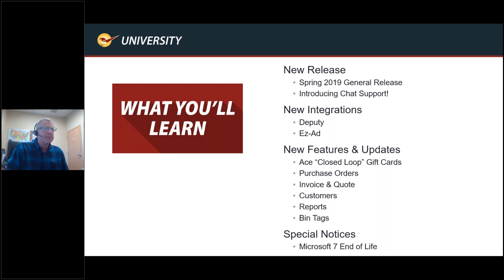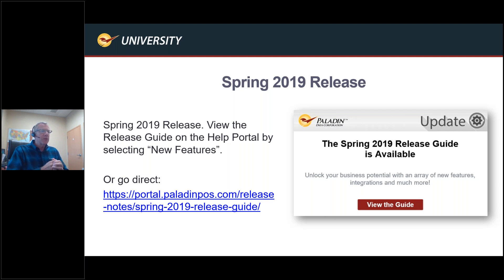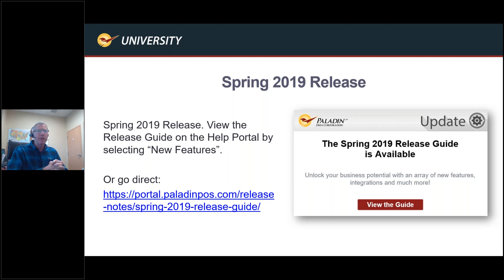Let's get started — this should be fairly quick. We're giving you a high-level overview of what's in the system. You can find specific information in two areas: one is the help portal, accessible from anywhere by going to portal.paladinpos.com. From there, go into the release notes and the spring 2019 release guide, or just type '2019' in the search bar and it will come up with all the features. We also have a webinar on this topic — type '2019' under webinars and you'll get a detailed feature list.